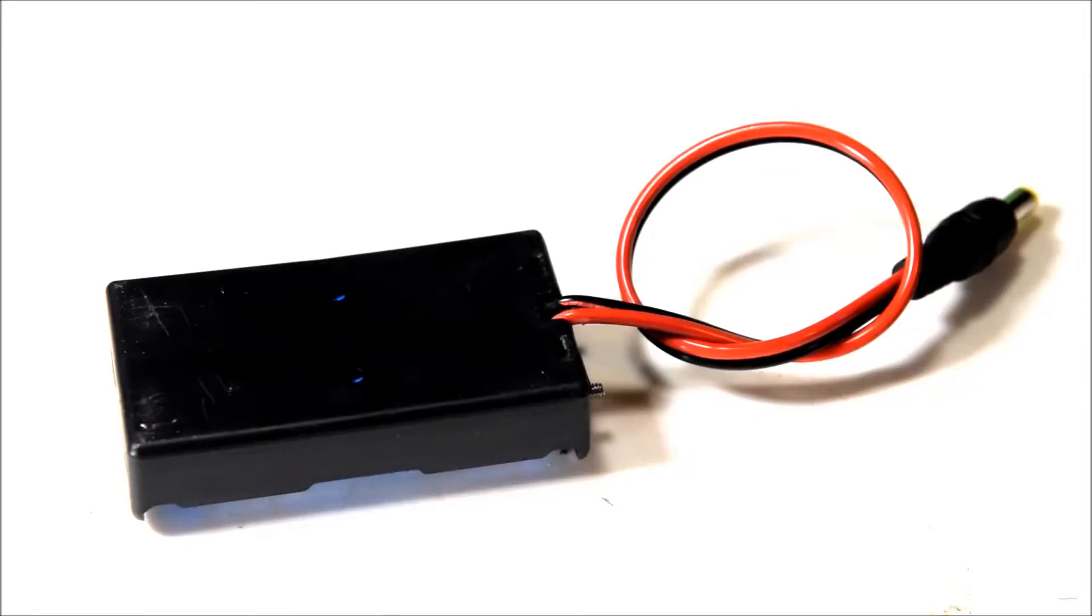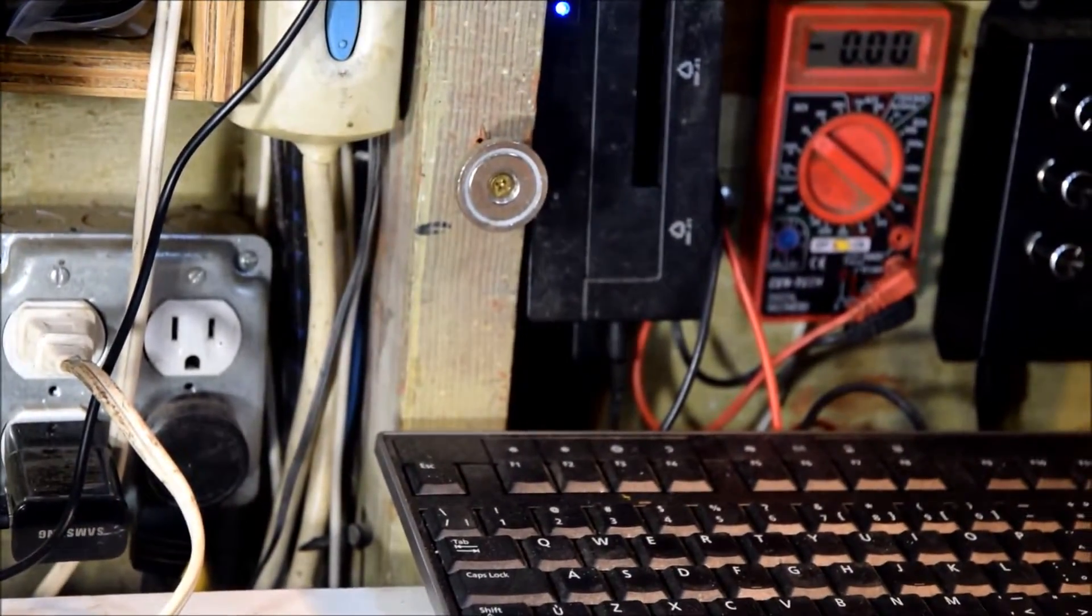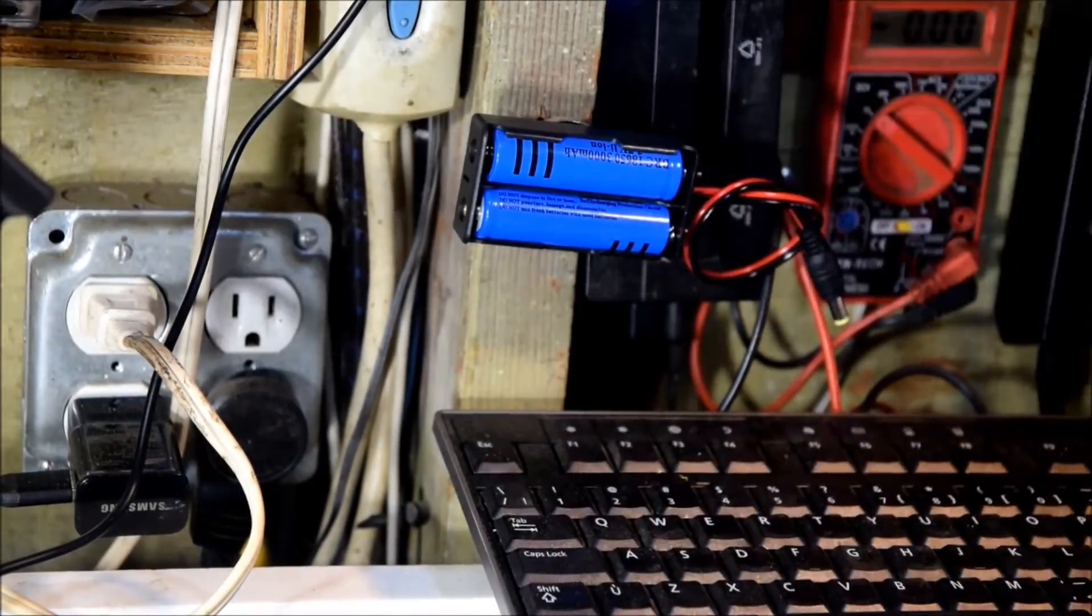Here I'm installing a self-sticking steel plate. These plates are typically used as cell phone magnetic mounts. Here I'll demonstrate using the magnetic mount.